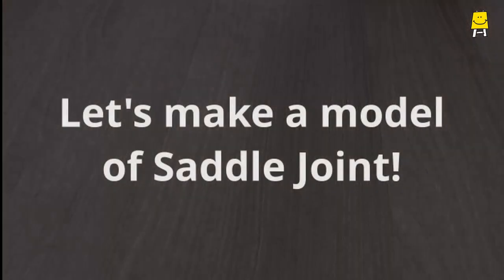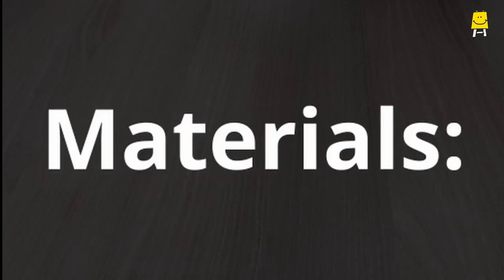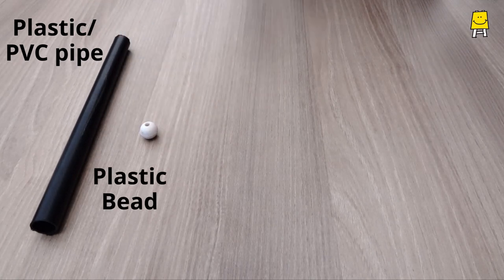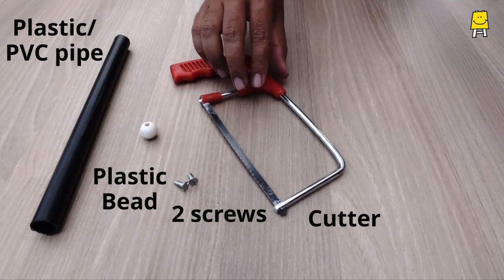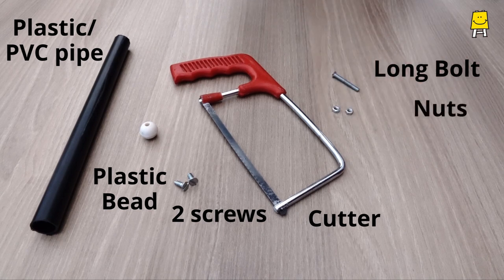Here is how to make a simple model of saddle joint. You will need plastic or PVC pipe, a plastic bead, two small screws, cutter, and a long bolt with fitting nuts and washers.